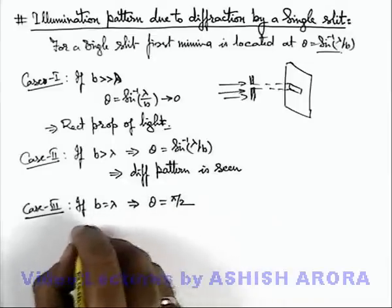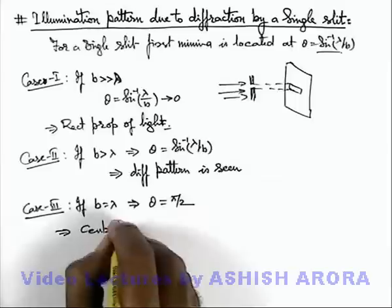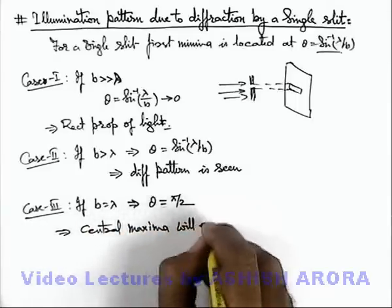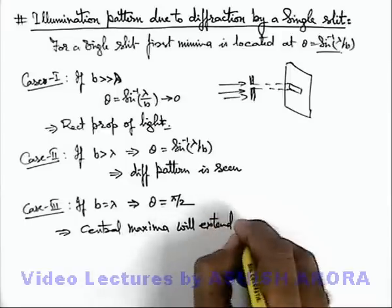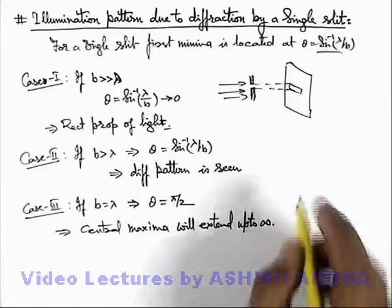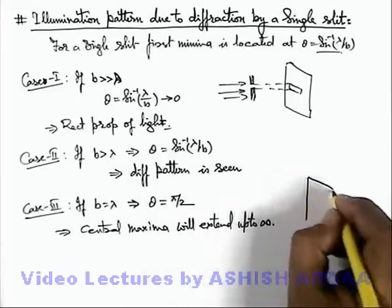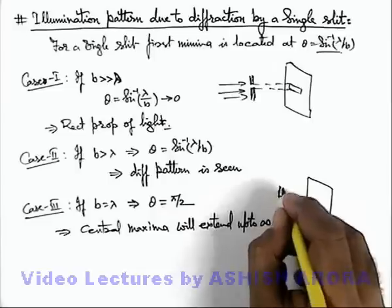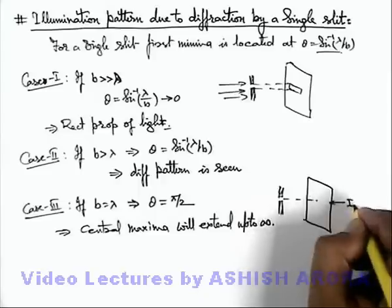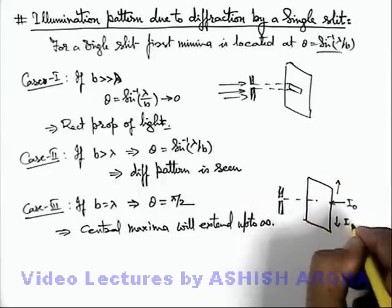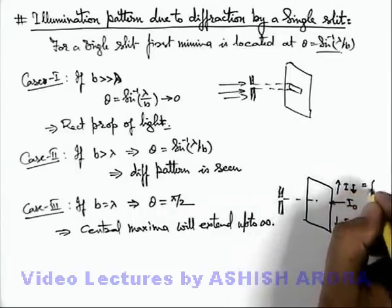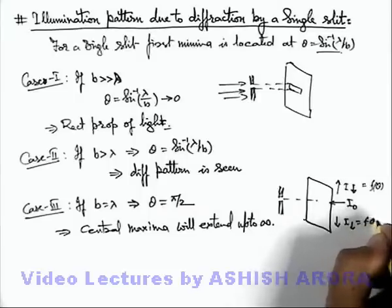This implies central maxima will extend up to infinity. That means on the screen there will be a gradient of illumination which is observed if this is the slit. And in front of slit we can say the intensity will be I_0, and on the two sides intensity will be decreasing function of theta. This will be decreasing as a function of theta on both the sides.